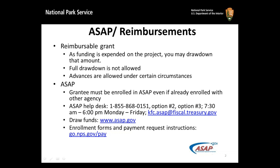When you are ready to draw down funds, we use a system called the Automated Standard Application for Payments, or ASAP, to transfer money to you. It is an electronic online payment application available 24-7. Once you are awarded a grant, funds do not automatically show up in your bank. You must make periodic drawdowns using ASAP to move money into your bank account. Instructions on how to draw down funds and general browser configuration requirements are available at go.nps.gov/pay.